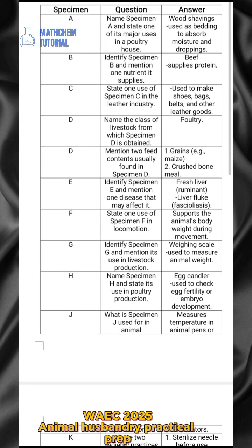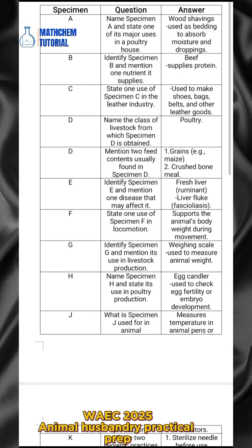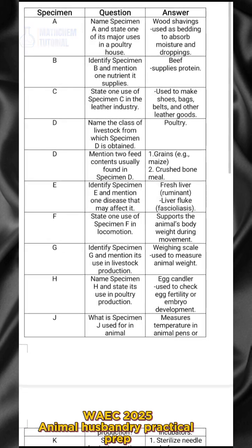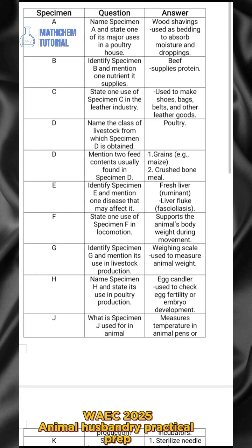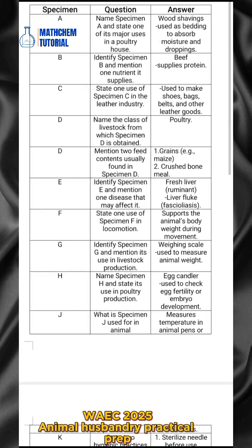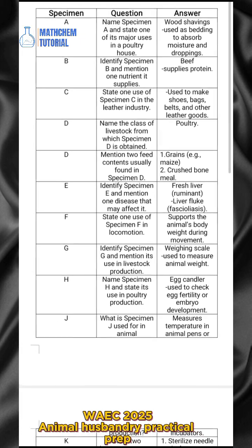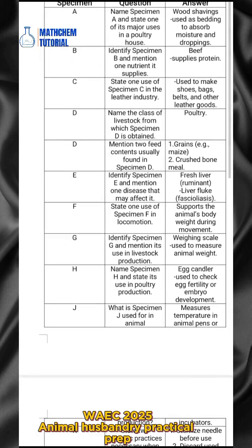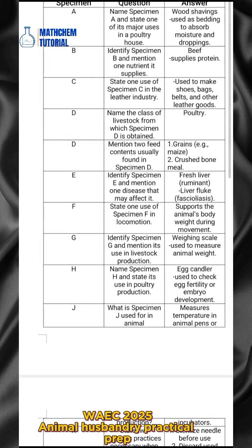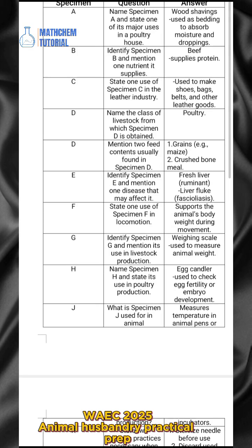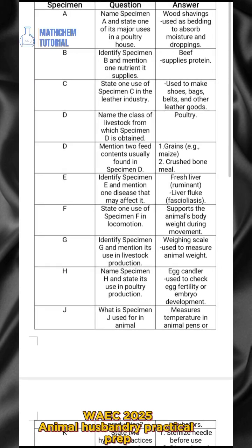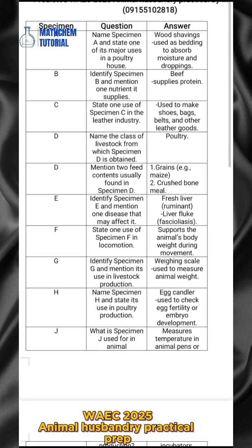For specimen C, you are asked to state one use of specimen C in the leather industry. The answer is: it is used to make shoes, bags, belts, and other leather goods.